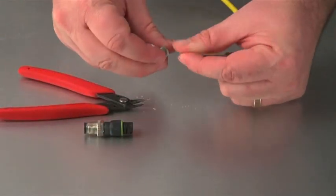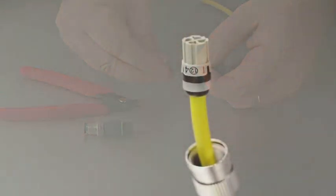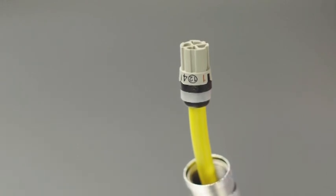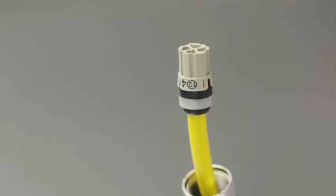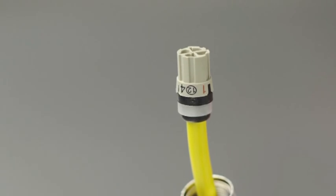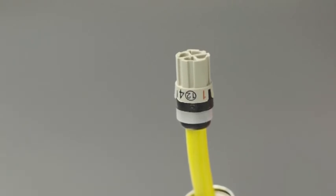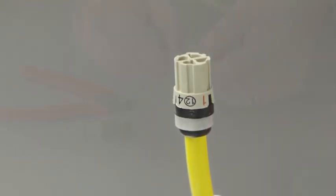Next, route the conductors through the contact carrier. A key feature of the contact carrier is the numbering and color coding. The numbers correspond to the final pin orientation on the connector. The color coding corresponds to the conductor colors.